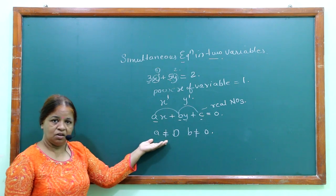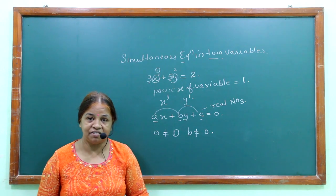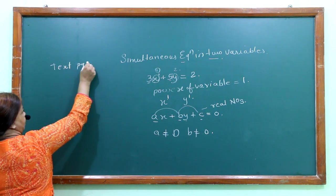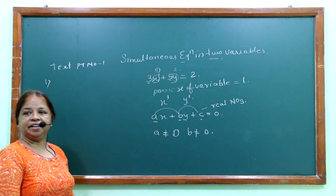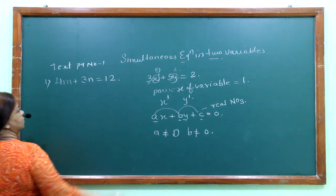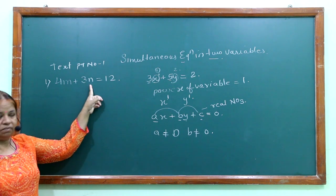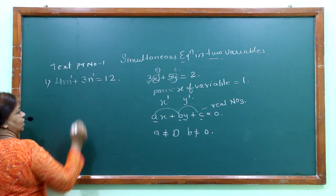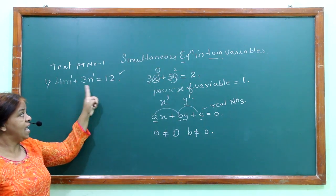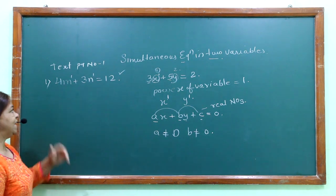Before proceeding to solve Exercise 1.1, we will first find out which equations are in 2 variables — you should be able to identify them. That is from the textbook, page number 1. The first equation is 4m plus 3n equals 12. Here we have m and n, so there are 2 variables. The degree is 1 and 1, so this is a simultaneous equation in 2 variables, since it has 2 variables and the degree is also 1.